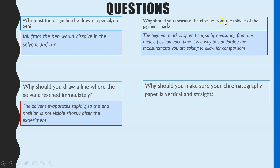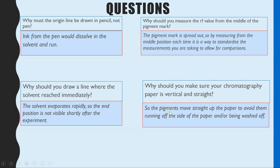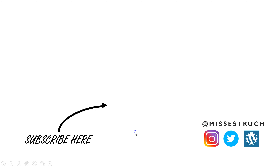Number three — you measure the Rf value from the middle of the pigment because the pigment mark is spread out; it's not one single precise dot. By measuring from the middle position each time, it standardizes your measurements and allows for fair comparisons. Number four — you should make sure your chromatography paper is vertical so the pigments move straight up the chromatography or TLC paper, to avoid them running off the side or being washed off, which would mean you have no results. And that is it for the chromatography required practical.